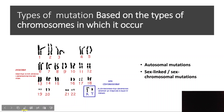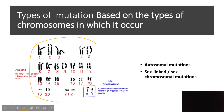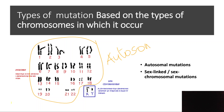Autosomes are chromosomes which are not directly involved in determining the sex of the organism. All chromosomes except the sex chromosomes are called autosomes. If a chromosome is directly involved in determining the sex of the organism, it is called a sex chromosome.